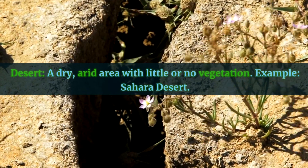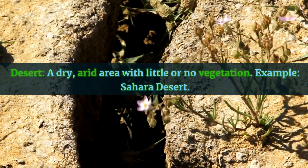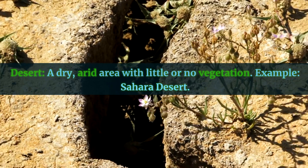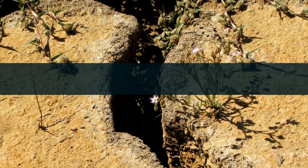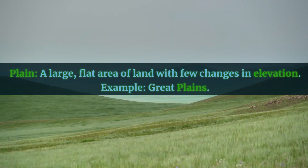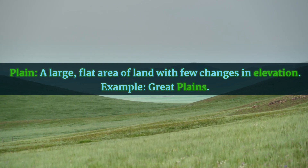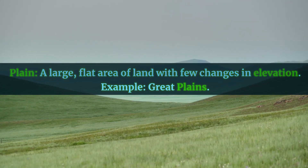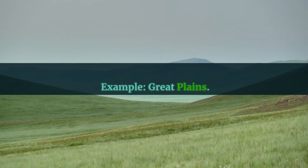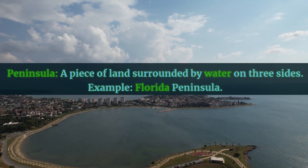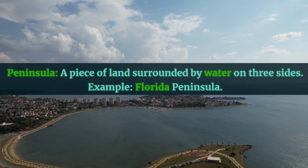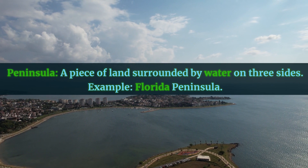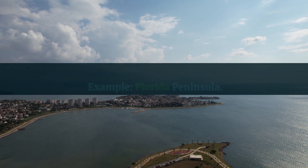Desert: a dry, arid area with little or no vegetation. Example: Sahara Desert. Plain: a large, flat area of land with few changes in elevation. Example: Great Plains. Peninsula: a piece of land surrounded by water on three sides. Example: Florida Peninsula.